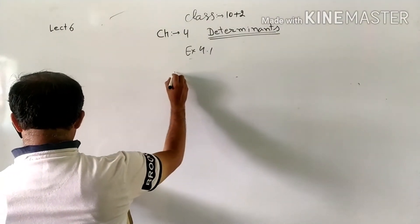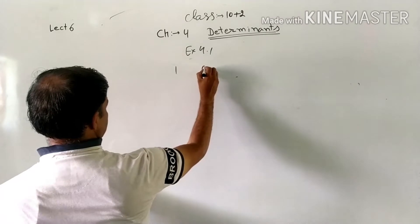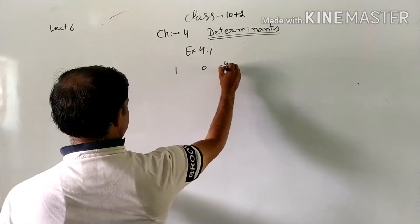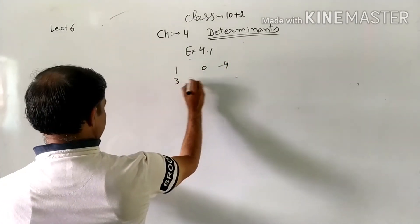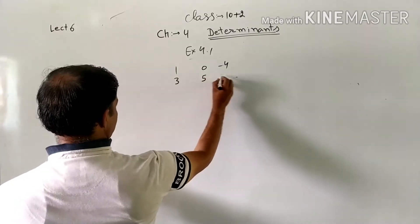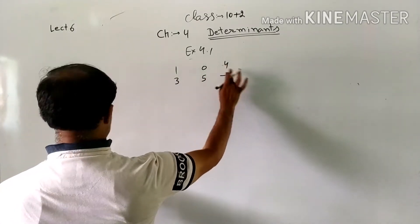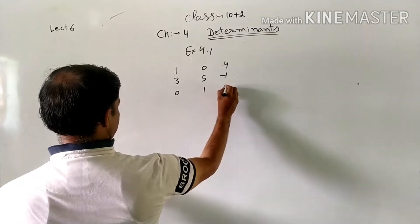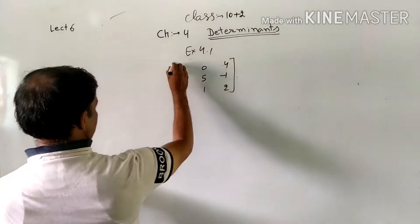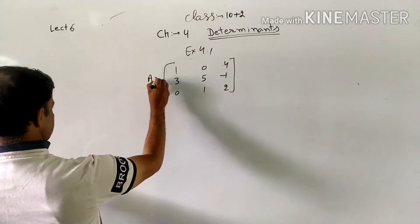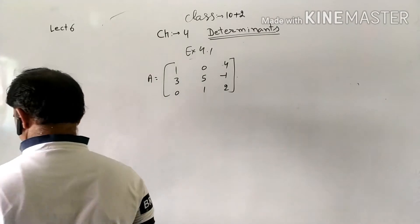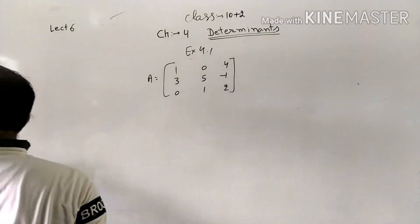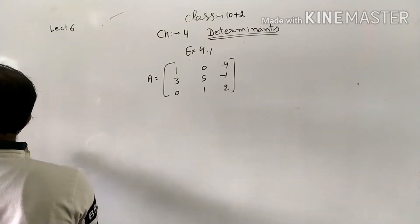A 3×3 example matrix is given to us: [1, 0, 4; 3, 5, -1; 0, 1, 2]. What do we need to find from this? Minor and co-factor.